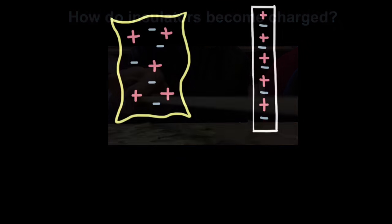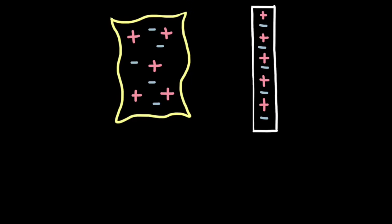But why does this happen? Well firstly, if we look at the insulating materials before they are rubbed together, we can assume one thing, that they have no overall charge. In other words, the positive charges balance out the negative charges supplied by the electrons. So both these objects have neutral charge. Now let's rub these materials together.